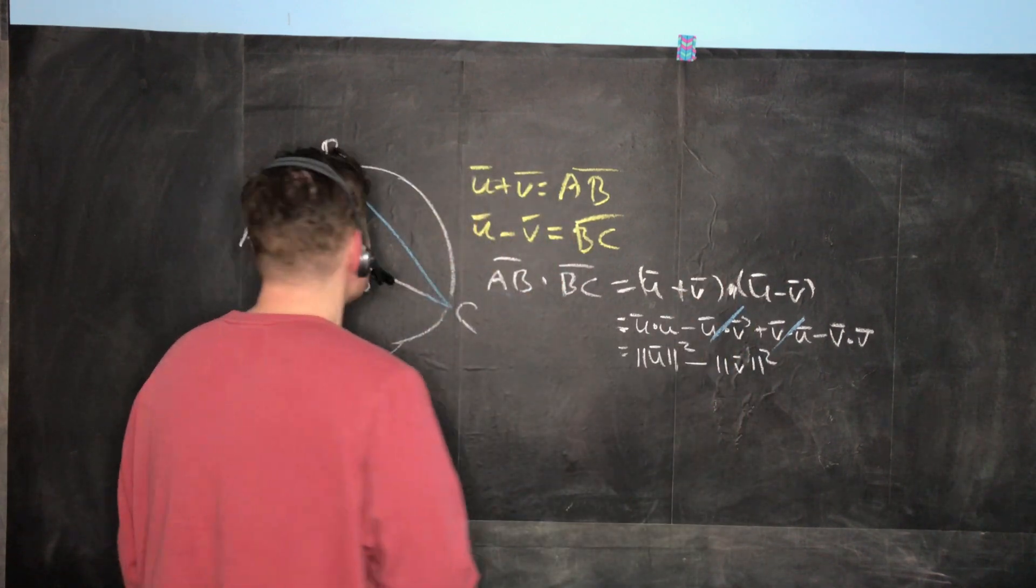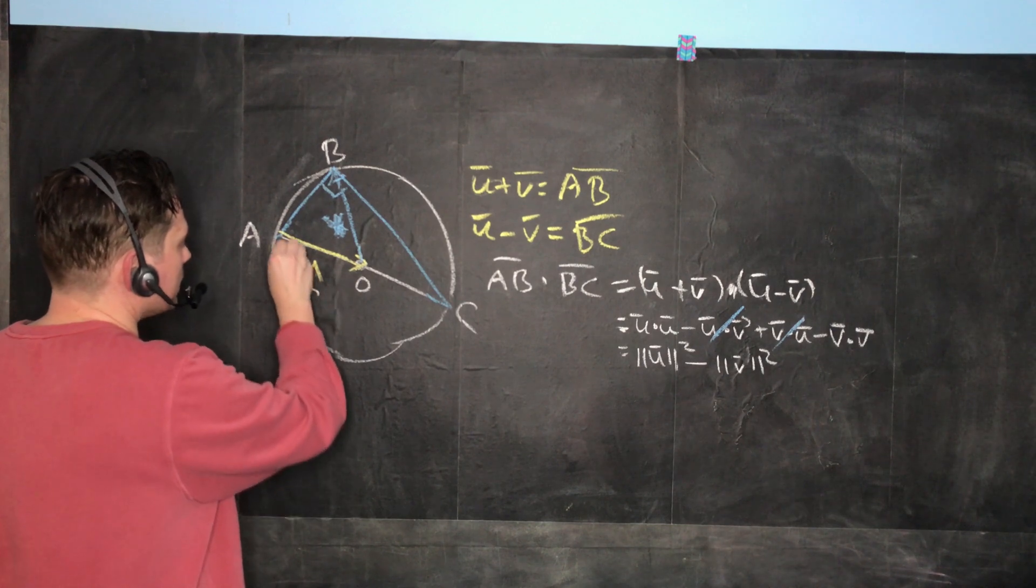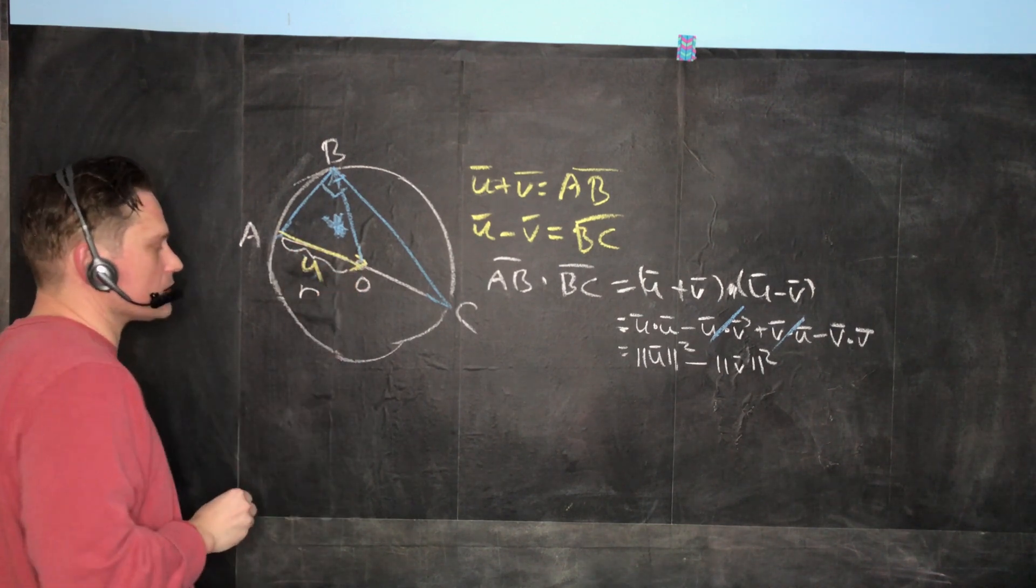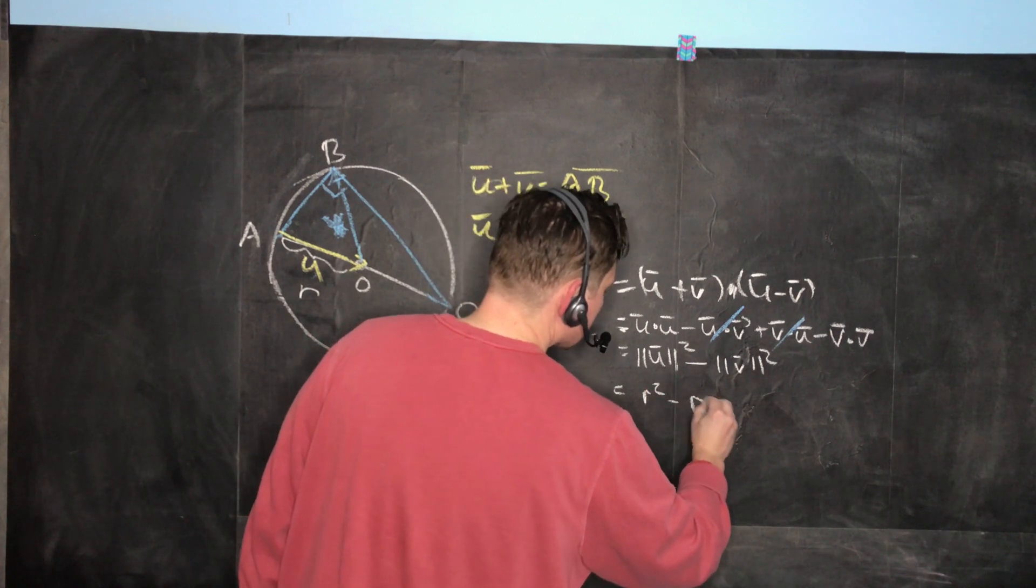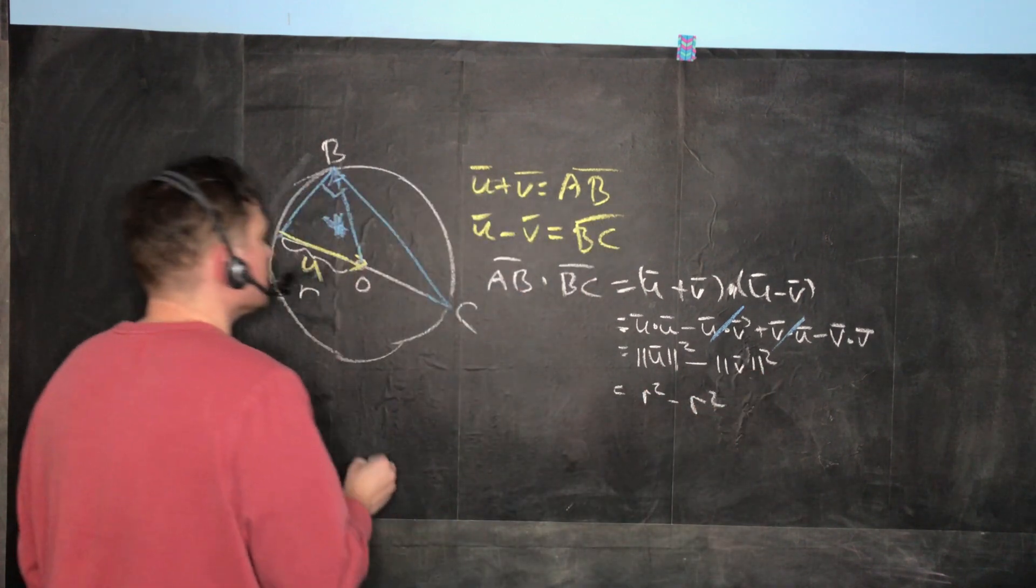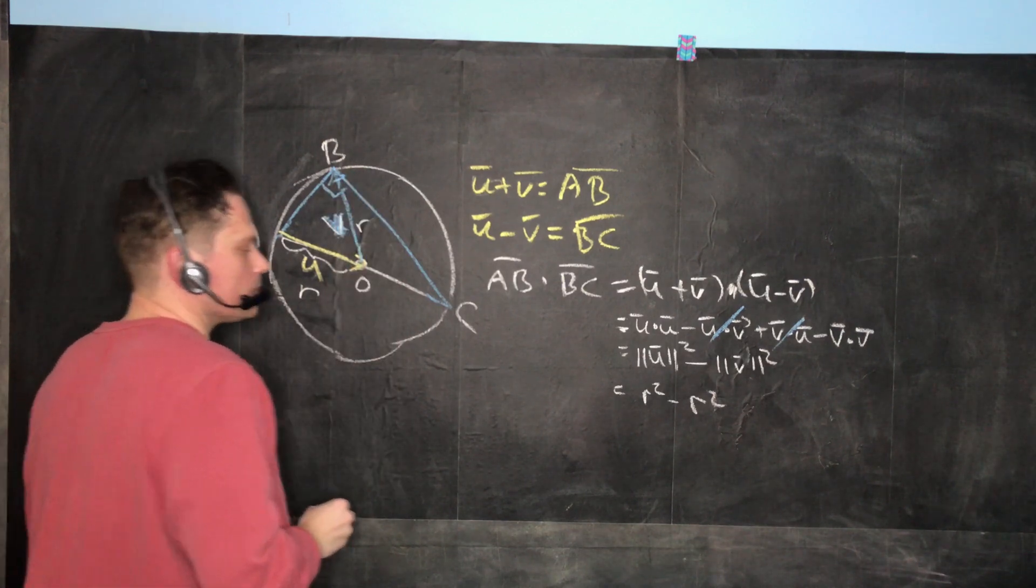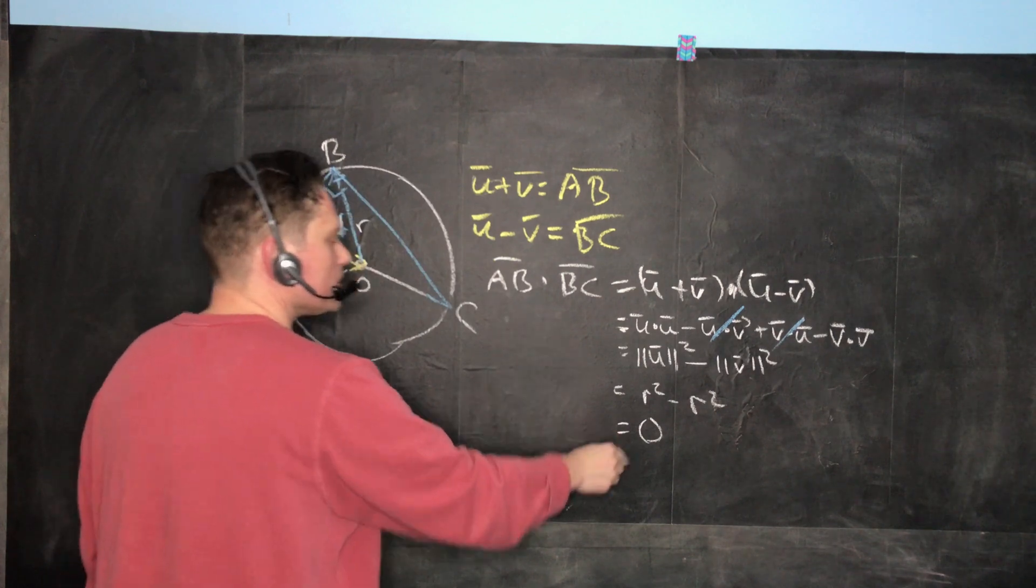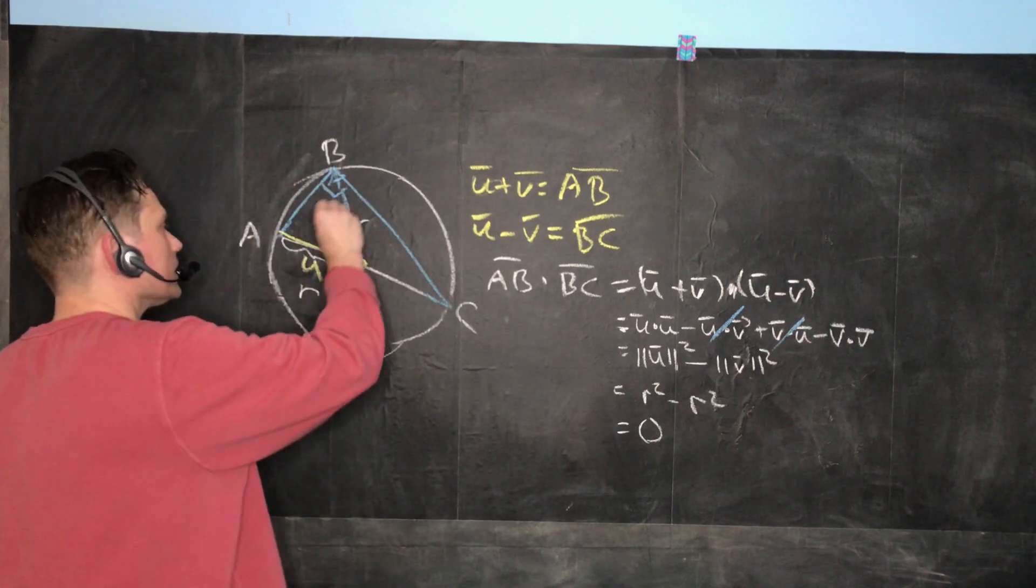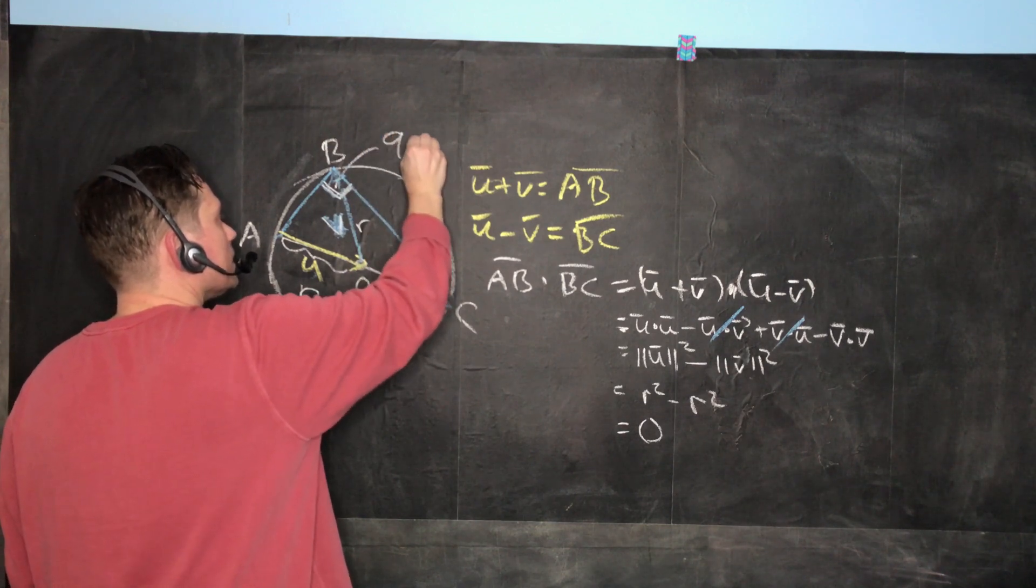But of course, if you come back over here, you can tell that U, the magnitude, that's just R, the radius of the circle. So this is going to give us R squared minus R squared. Because V, as you can see, is right here, that's also the radius of the circle. Therefore, we end up with zero. In other words, AB dotted with BC really is zero. Therefore, this really is, now we have confirmed right here, 90 degrees.